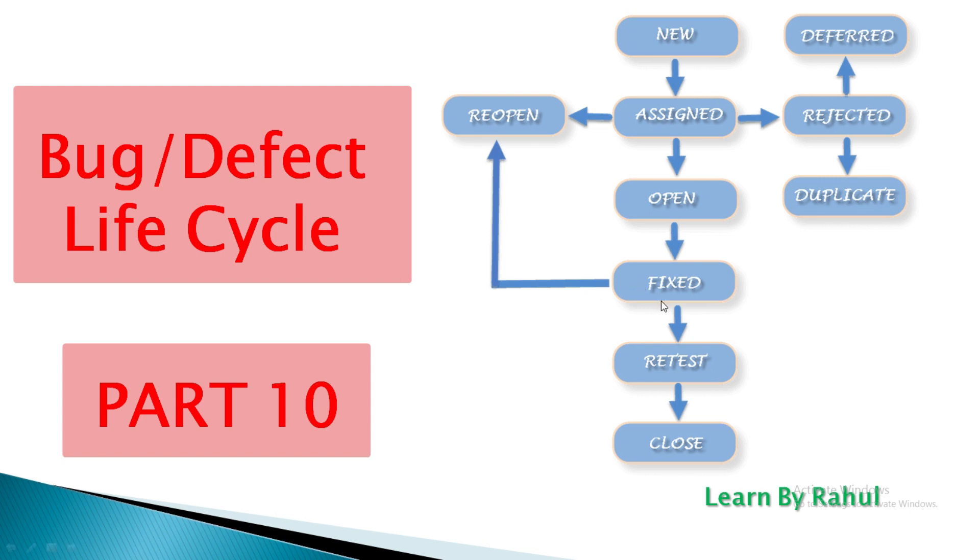If the bug is fixed, then the tester tests that particular defect and retests it to ensure it is working fine. The tester does the retesting at this stage to check whether the defect is fixed and changes the status to RETEST. After retesting, if there is no bug detected, the status is assigned as VERIFIED. If the bug persists even after the developer has fixed it, the tester changes the status to REOPEN.